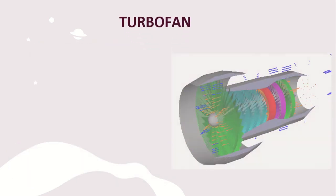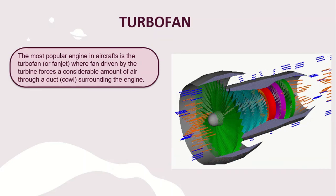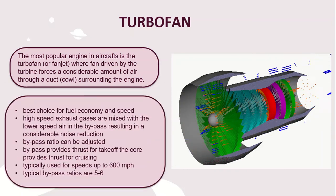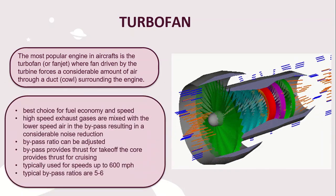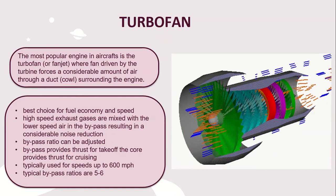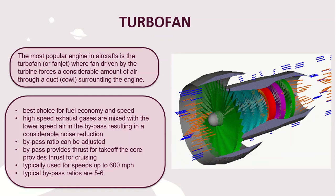The most popular engine in aircraft is the turbofan, where a fan driven by the turbine forces a considerable amount of air through a duct surrounding the engine. The turbofan is the best choice for fuel economy and speed. High-speed exhaust gases are mixed with the lower-speed bypass air, resulting in considerable noise reduction. The bypass ratio can be adjusted; bypass air provides thrust for take-off and the core provides thrust for cruising. Typically used for speeds up to 600 miles per hour, with bypass ratios of 5 to 6.